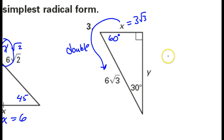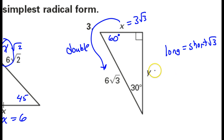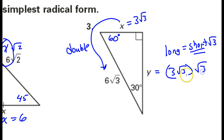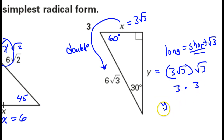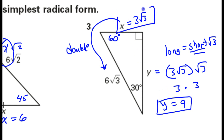For the long leg, the long leg is always the short leg times radical 3. So y, the long leg, is going to equal the short leg — and here the short leg is 3 radical 3 — times radical 3. So I'm going to have radical 3 showing up twice. Radical 3 times radical 3 is 3, and bringing down that 3 means this is going to equal 9. So y equals 9 and x equals 3 radical 3.